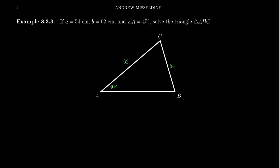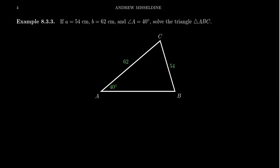In this video we're going to solve the oblique triangle ABC where we're given side length A which is 54 centimeters, side length B which is 62 centimeters, and the angle measure A which is given as 40 degrees, as illustrated in our diagram.